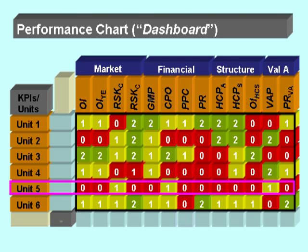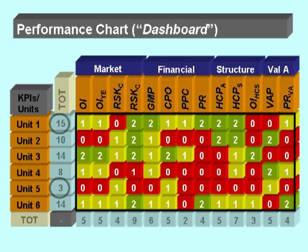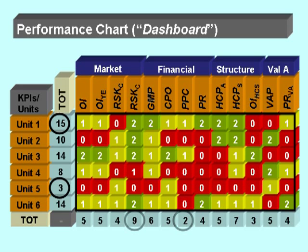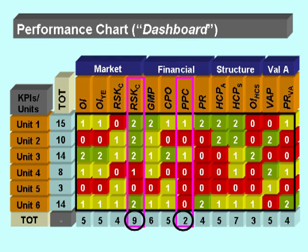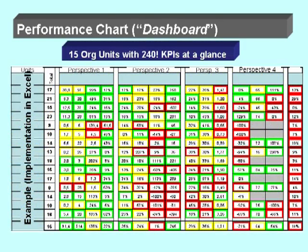We arrange the KPIs in a table form: for each unit and each KPI we fill in the color code, forming the dashboard or performance chart. We can look at a row to see the current status of an individual organizational unit, or look at a column to see the overall status of a specific key performance indicator. Since we assigned a value to each color, we can sum up in rows and columns to compare different organizational units or different KPIs.